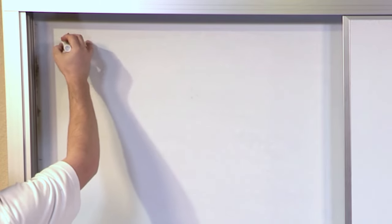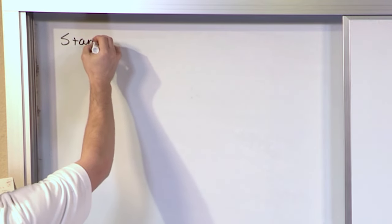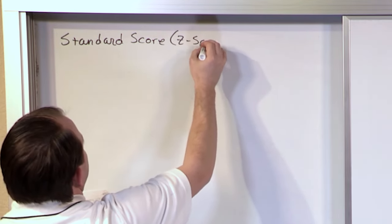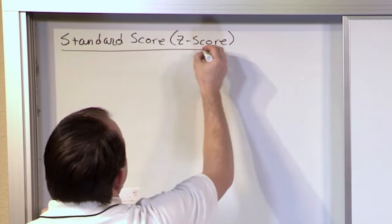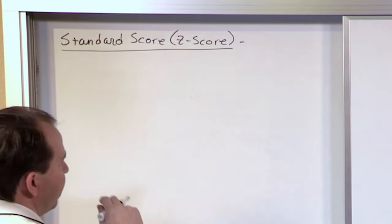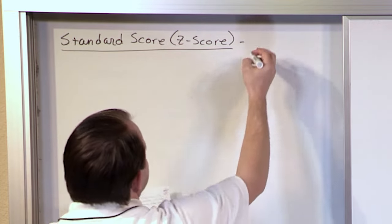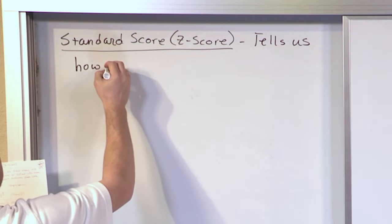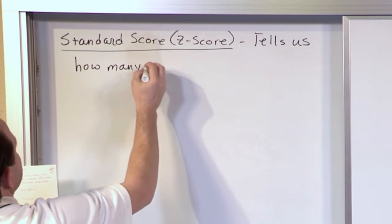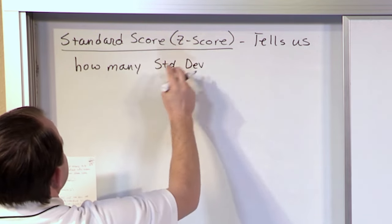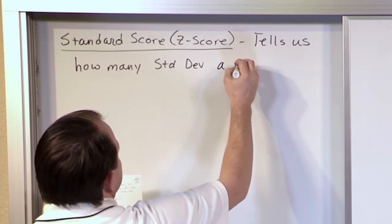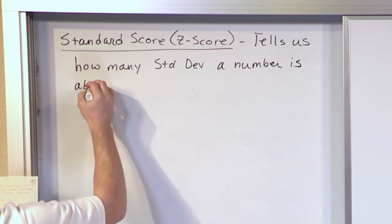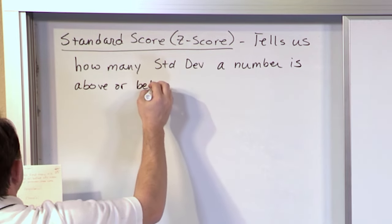This is something you're going to see a lot. It's called a standard score, also called a Z-score — you might see both in your book. I'm going to write it in my own words; your book probably won't have this kind of definition. It tells us how many standard deviations a number is above or below the mean.